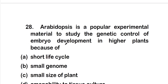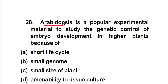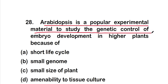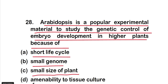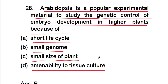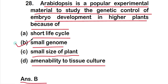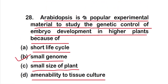Question 28: Arabidopsis is a popular experimental material to study the genetic control of embryo development in higher plants because of option A: short life cycle; option B: small genome; option C: small size of plant; or option D: amenability to tissue culture. The right answer is option B — small genome. Because of its small genome, Arabidopsis is used to study the genetic control of embryo development.